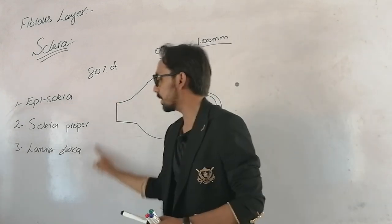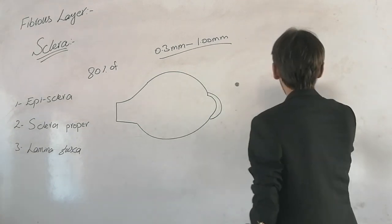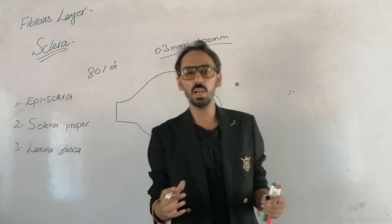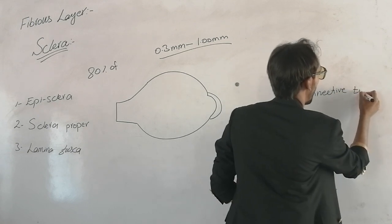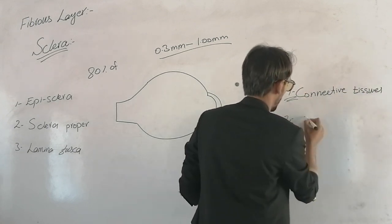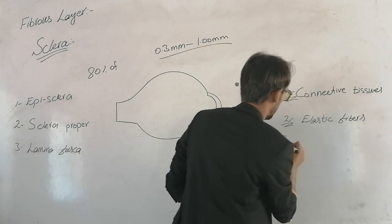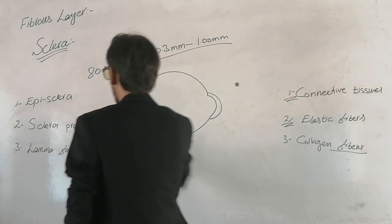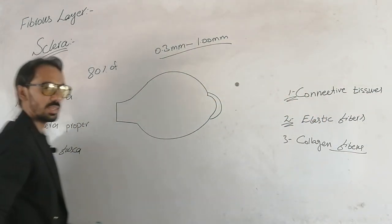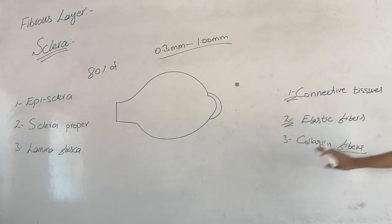These three layers of the sclera are made up of different compositions. They contain dense connective tissues, elastic fibers, and collagen fibers — three different types of connective tissues found across the three layers.